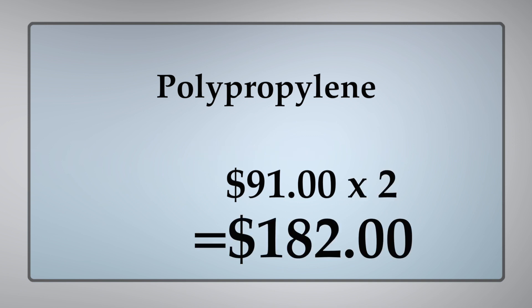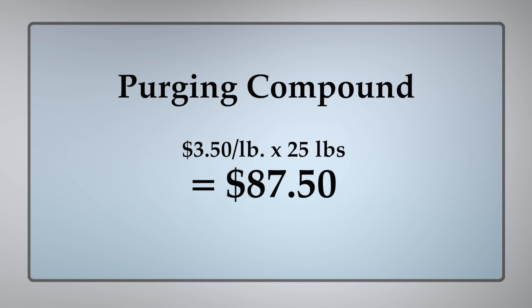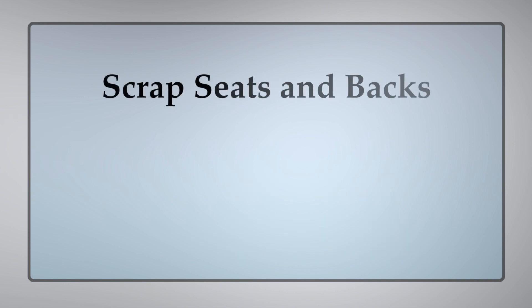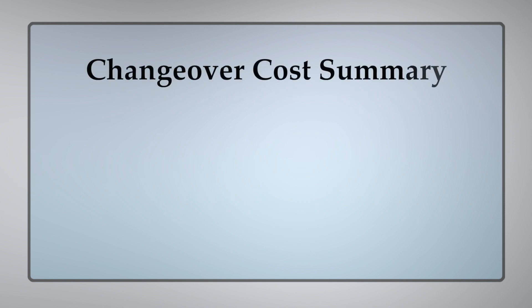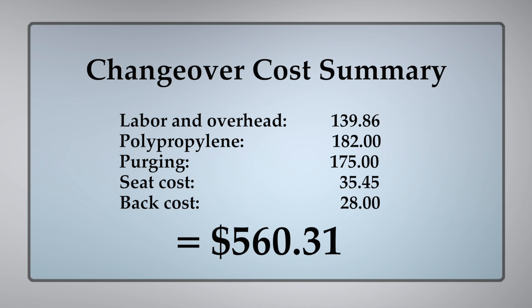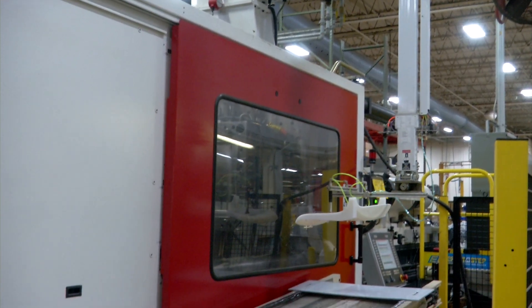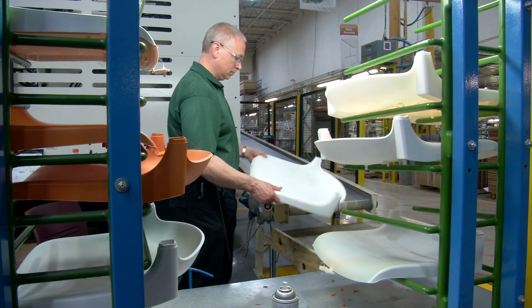The purging compound cost is about $3.50 a pound times 25 pounds on average per color change, which equals $87.50 — multiplied by two is $175. For scrap seats and scrap backs, we average about five scrap parts per color changeover: a seat cost of about $35.45 and a back cost of about $28. The total cost per changeover then is about $560.31. Considering the number of changeovers we are doing to meet our customer needs, you can now see why this is critical. Please keep in mind that while this is the average, there are many times where some special colors may cost significantly more than this.